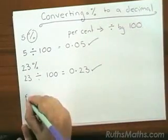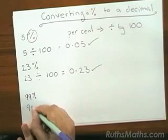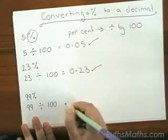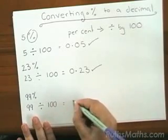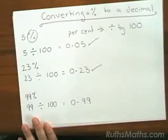Let's go with another one. 99 percent is the same as saying 99 divided by 100 and your calculator will give you 0.99.